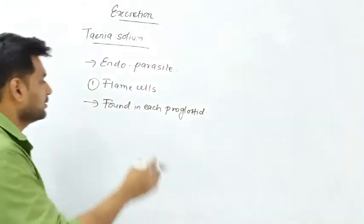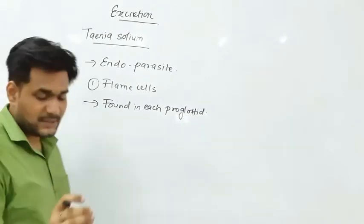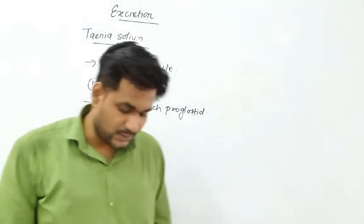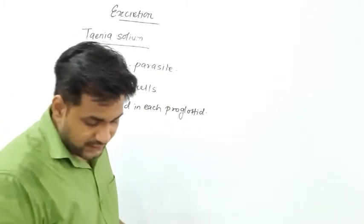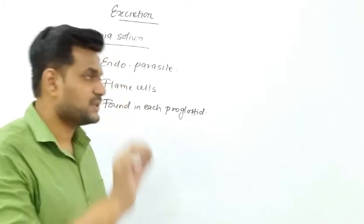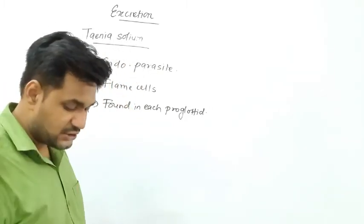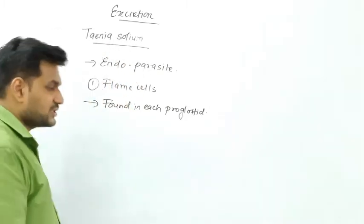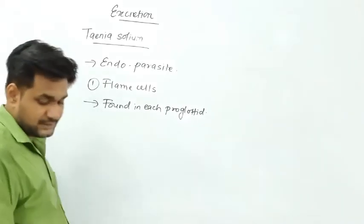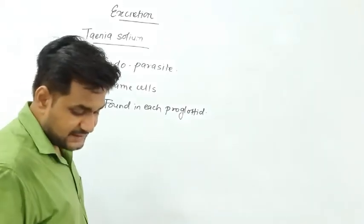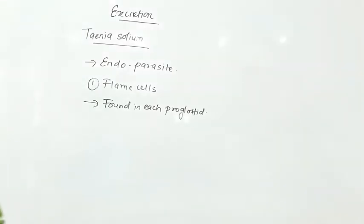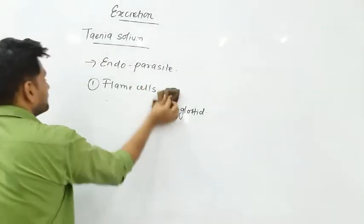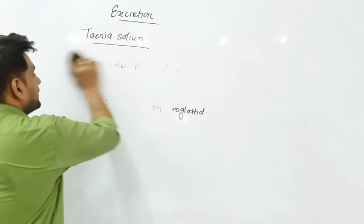After that, flame cells are found in very large numbers. The flame cells are connected to thin, capillary-like tube structures, which we call excretory tubules. Let us now see the flow chart of this system.